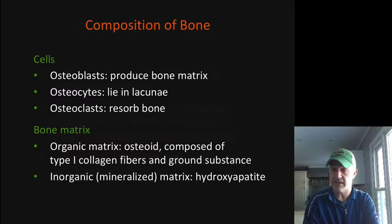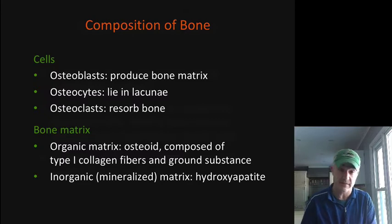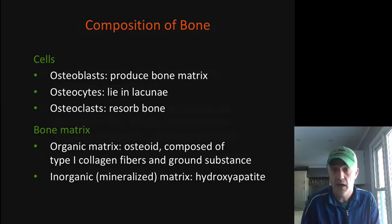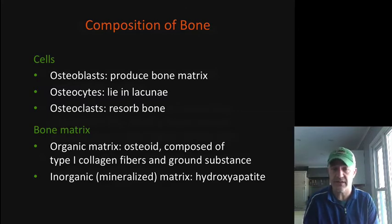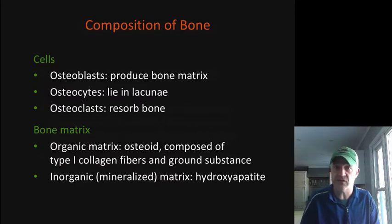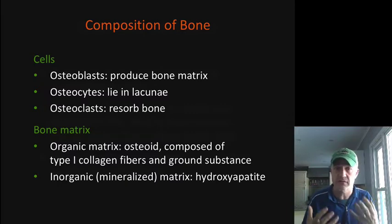The bony matrix is called osteoid. It contains collagen fibers — if you dissolved bone in vinegar the acetic acid would leave the fibers behind. There's also a ground substance with amino glycans, but the main thing secreted in osteoid is two different calcium salts that combine to form hydroxyapatite, which is that very hard matrix that bone has.